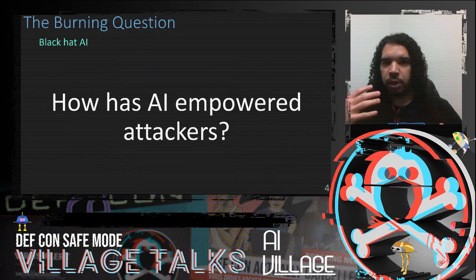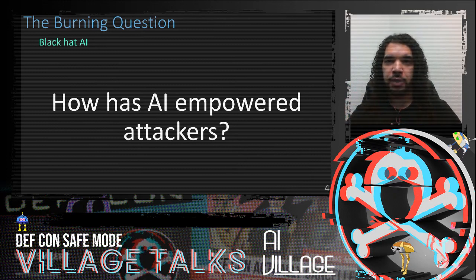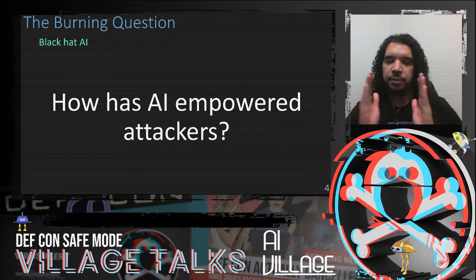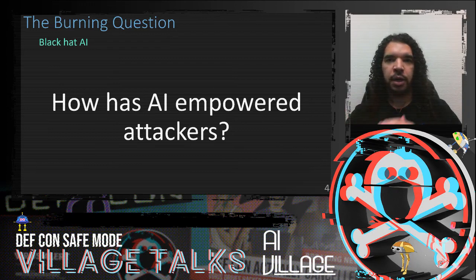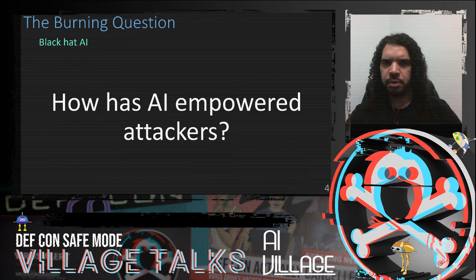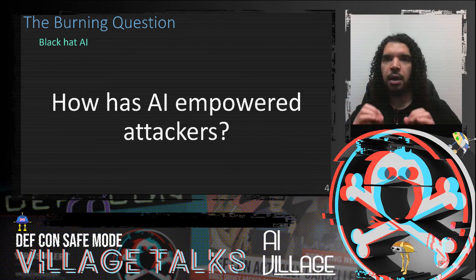So the burning question is: how is AI empowering adversaries, or how can it empower adversaries moving forward? I see the age of AI and machine learning today — we're at the very beginning of what it can do for the security industry on both the attack and defense side. If you remember back in the 80s and 90s, antivirus, intrusion detection, vulnerability scanners were all simple scripts, and then over time they grew into what are now multi-billion dollar industries. So I think we're at the very beginning of what AI and machine learning can do for the security community.